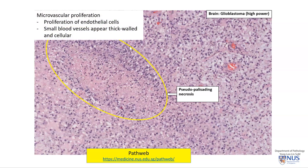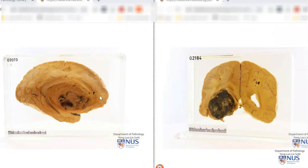Another feature is microvascular proliferation, where in the small blood vessels there is proliferation and piling up of endothelial cells so that these vessels appear thick-walled and cellular. In summary, we have two examples of a high-grade glial tumor — the glioblastoma — where on the left we see an ill-defined fleshy tan mass with areas of necrosis and hemorrhage, and on the right a somewhat better-defined, extremely hemorrhagic mass with areas of necrosis. These tumors are rapidly growing, aggressive, and carry a poor prognosis. Thank you.